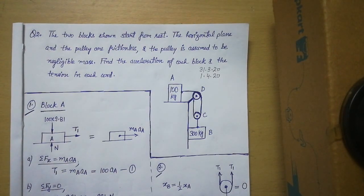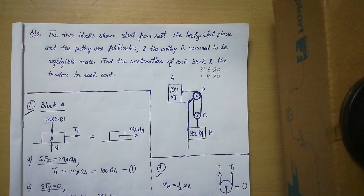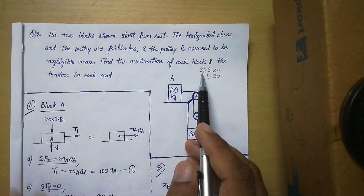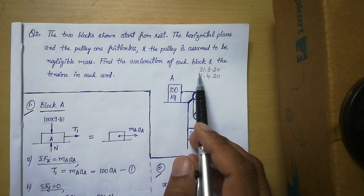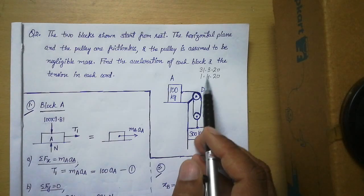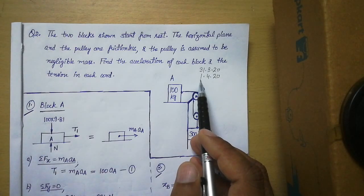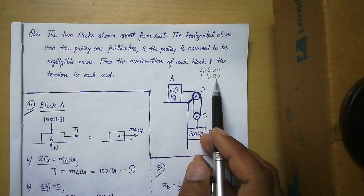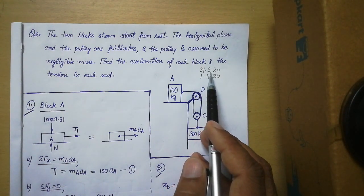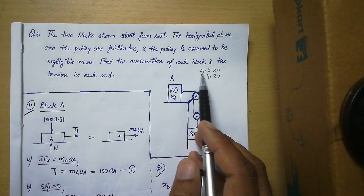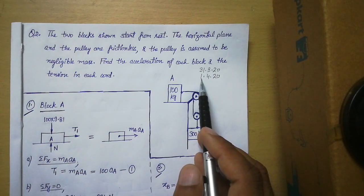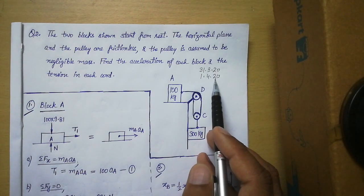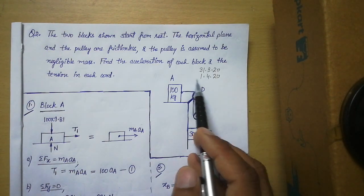Hello students. Today we will talk about another numerical of unit number 6. The name of the unit is kinetics of particles, and based on that unit I have already uploaded two files. One is 31.3.20 and another is named as 1.4.20. In file 31.3.20 I have uploaded two numericals of unit 6, and in file 1.4.20 I have uploaded the theory of unit number 6.